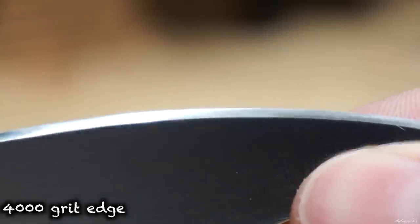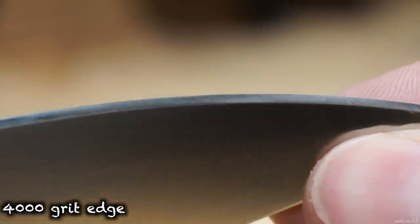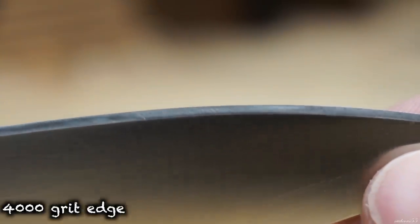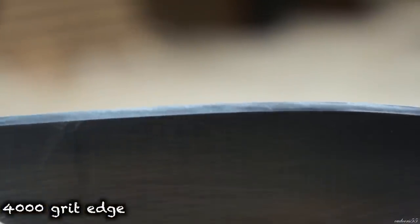And here's what the edge looks like after a 4000 grit Norton stone. Again you can see some of those lower grit scratches coming through a 4000 grit edge. These scratches are impossible to see without any kind of magnification unless you're Superman.